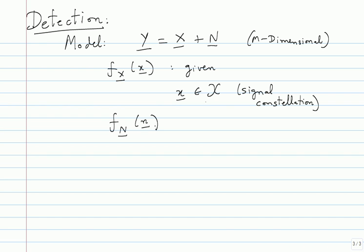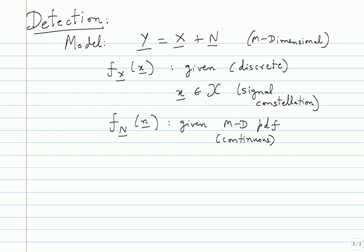The noise statistic is given — it is an M-dimensional PDF, typically continuous. So X is discrete and the noise is continuous. Another assumption: X and N are independent. Once you have all of this you can find the conditional PDF of Y given X, the joint PDF of Y and X, and so on. The joint PDF of Y and X when X is discrete and Y continuous can be handled using delta functions.